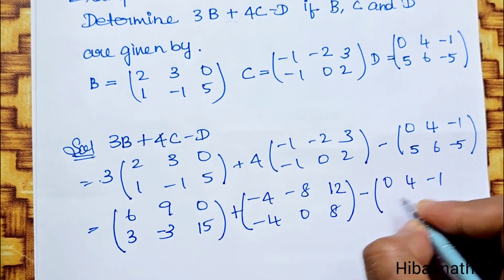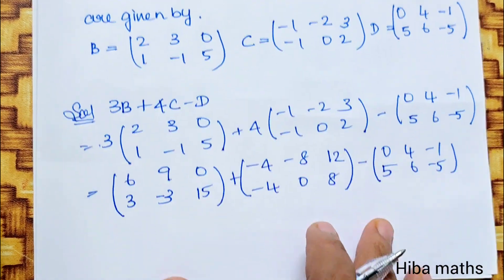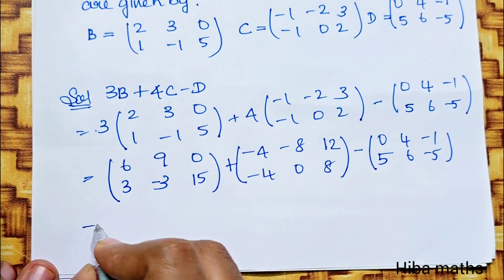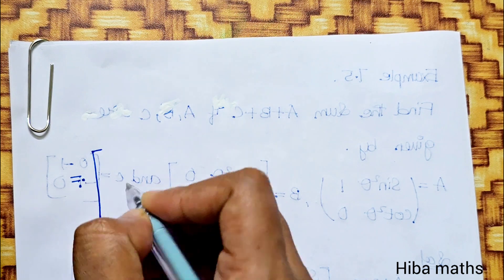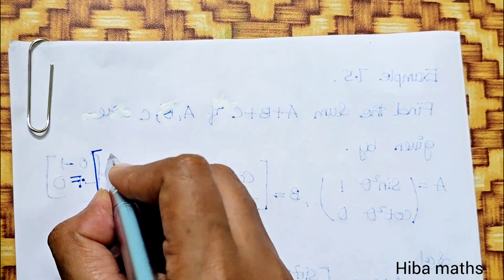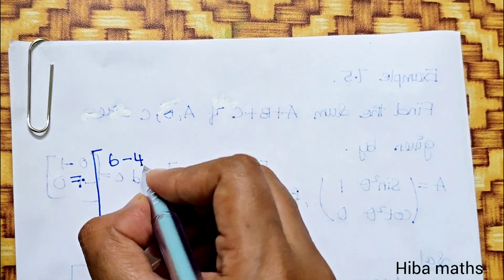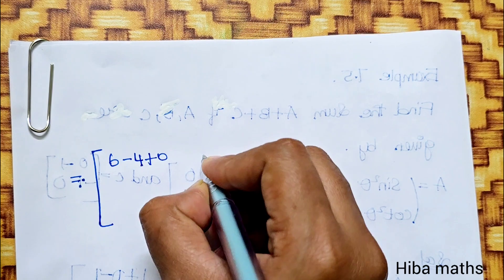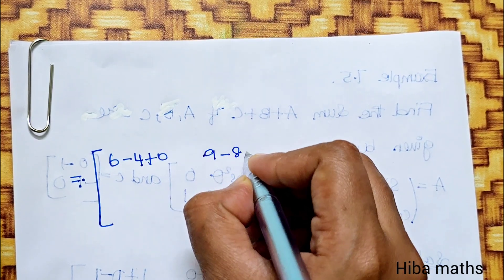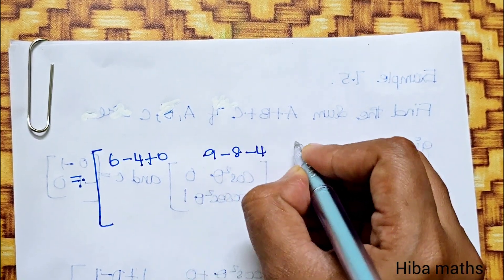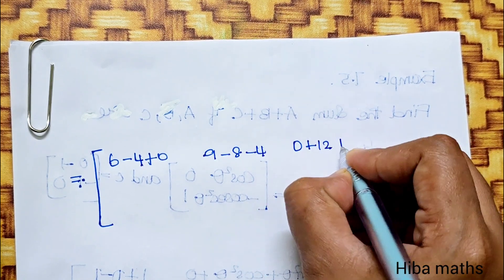Minus [0, 4, minus 1, 5, 6, minus 5]. Combining: minus 3, minus 5, 6, plus mu minus 4, plus 0. Minus 4, plus 0, minus 4. 9, minus 8, minus 4. Minus 4, 0 plus 12.